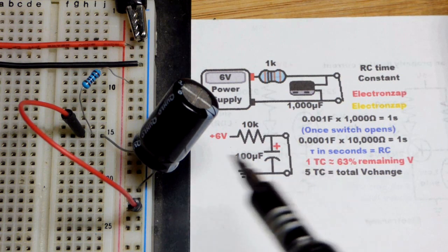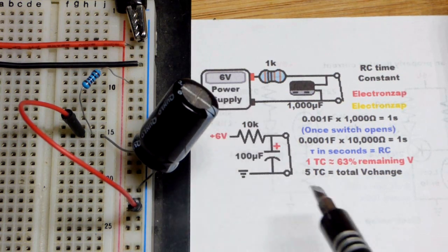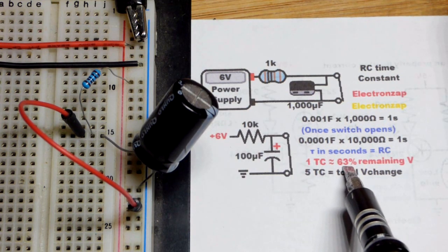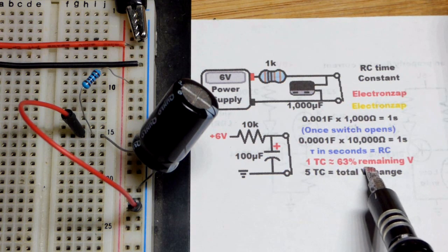But in any case, a time constant, if you're changing from one voltage to another, the one time constant will get you about 63% of the way.